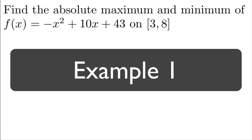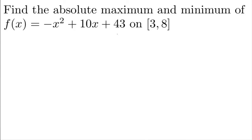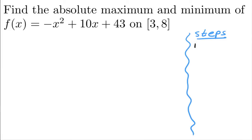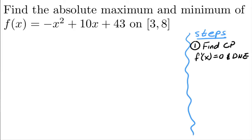We're trying to find the absolute maximum and minimum of this polynomial. I'll summarize the steps here. The first step is to find the critical points — remember, you find where the derivative is equal to zero or does not exist. So let's find the derivative.